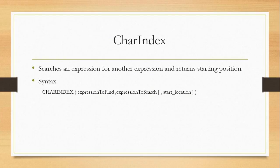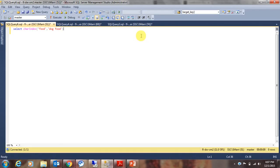Charindex. This function searches an expression for another expression and returns the starting position if found. For the charindex function, you need to provide two arguments: expression to find and expression to search. The third argument, which is the start location, is an optional one.